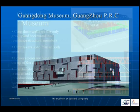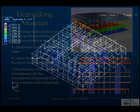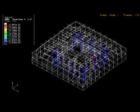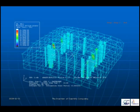Guangdong Ningxian — a building in Guangzhou that looks like a treasure box. The core shear walls are the only gravity and horizontal load-resisting structural members. The cantilever is 25 meters on both sides and the lower stories are hung from the tips of the cantilever frame. The simulation shows some members buckling and some shear walls going plastic, and the final stage shows damage in the core wall.